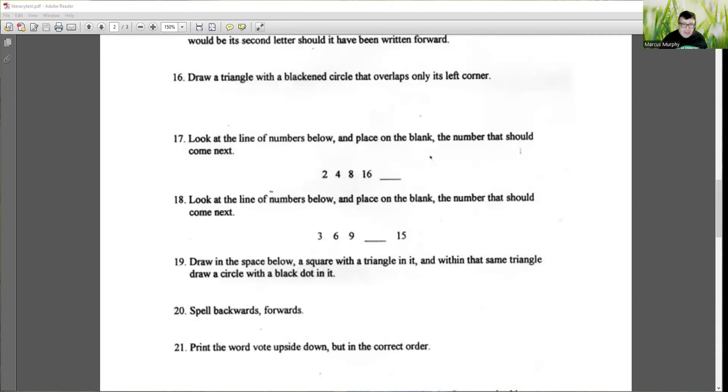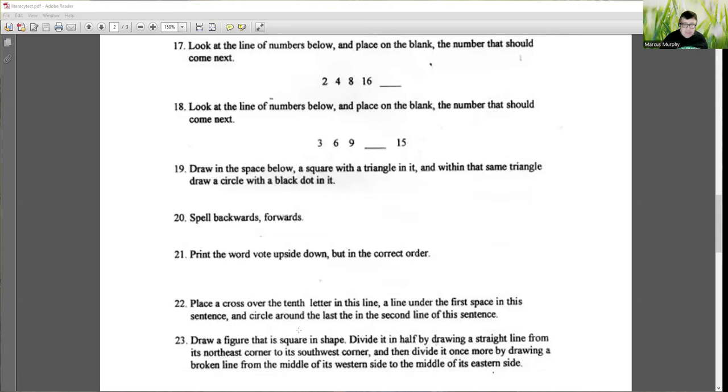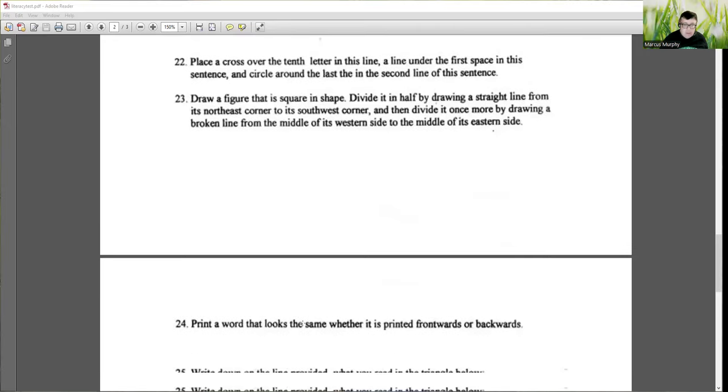Twenty one, print the word vote upside down, but in the correct order. Place a cross over the tenth letter in this line, a line under the first space in this sentence, and circle around the last line in the second line of this sentence. Draw a figure that is shape and square in shape, divide it in half by drawing a straight line from its northeast corner to its southwest corner. And then divide it once more by drawing a broken line from the middle of its western side to the middle of its eastern side. Even reading those instructions and processing them will take some time.